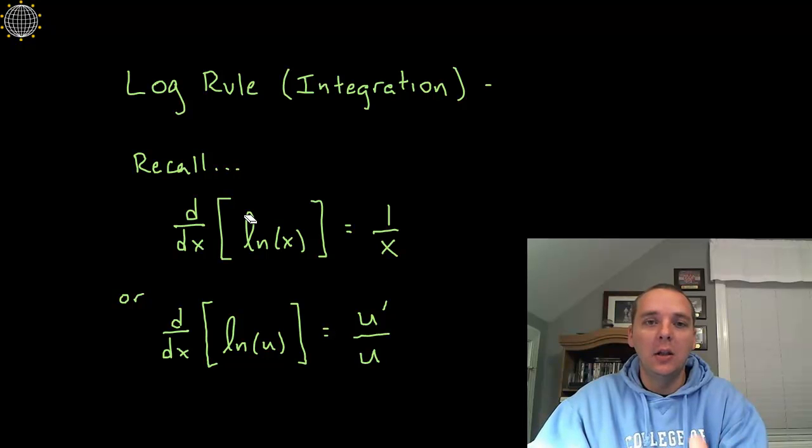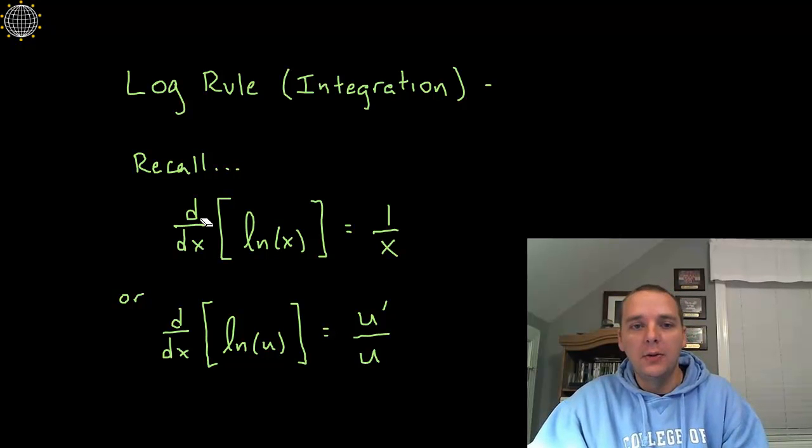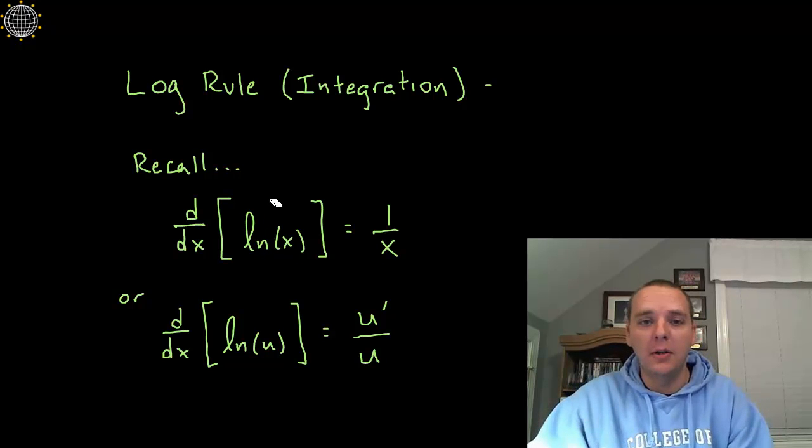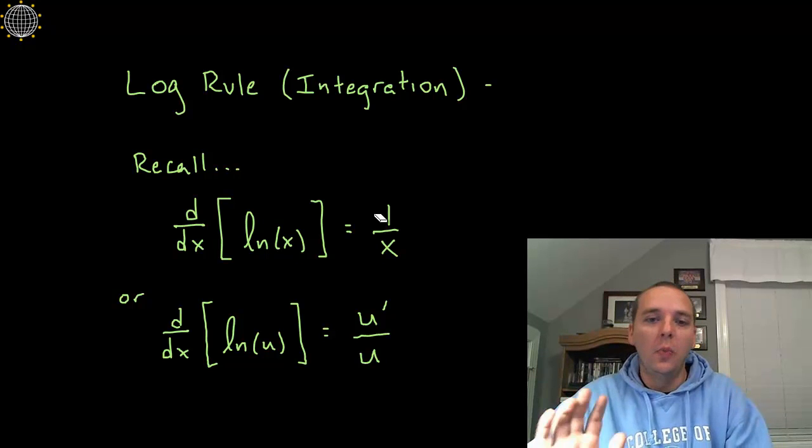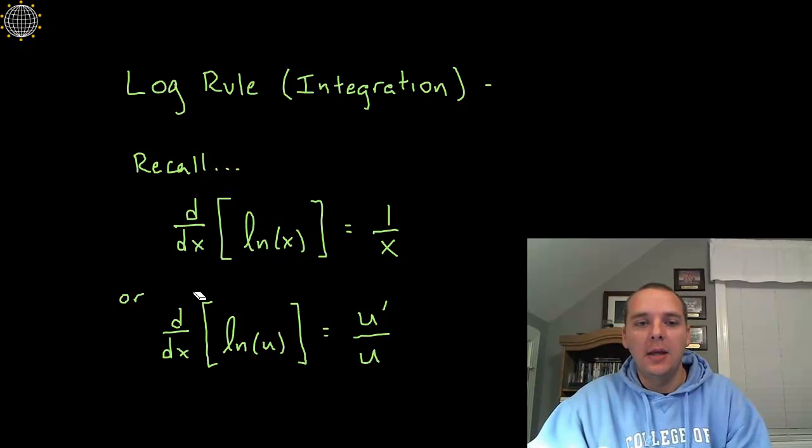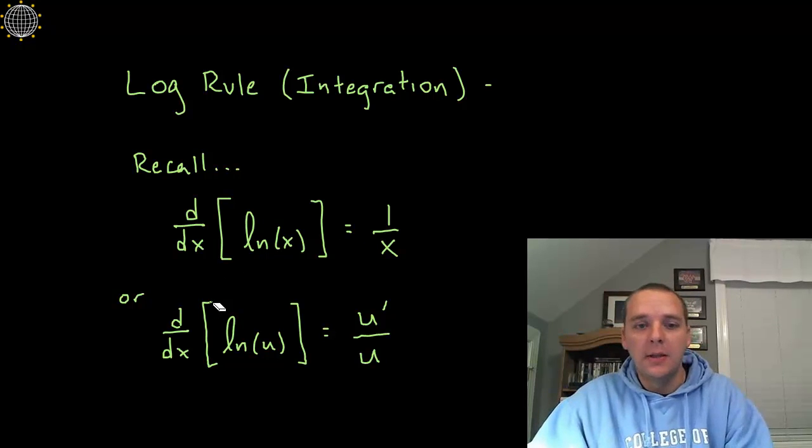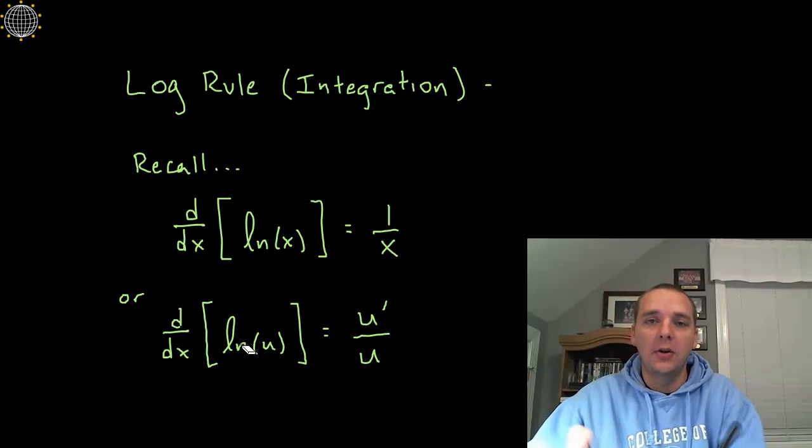So this is what's known as the log rule. Before I show it to you, let's just quickly remember how we differentiate logarithms. The derivative of the natural log function, which is the one we primarily study, is 1 over x. And in general, if you were going to use a chain rule with this, then the derivative of ln(u) would be the derivative of the inside over the inside.